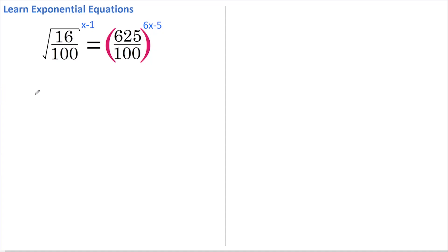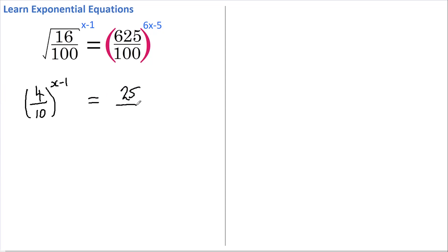Let's start by evaluating the square roots on the left hand side. We've got root 16 which is 4, and root 100 which is 10, so 4 over 10 to the power of x minus 1. On the right side, the square root of 625 is 25 and the square root of 100 is 10, so I'm rewriting this as 25 over 10 squared.